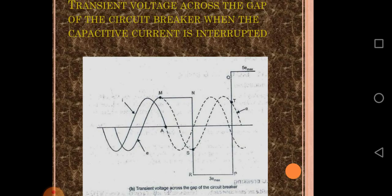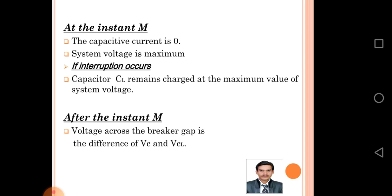This waveform shows the transient voltage across the gap of the circuit breaker when the capacitive current is interrupted. According to the waveform, the capacitive current is zero and the system voltage is maximum at instant A. If interruption occurs, capacitor Cl remains charged at the maximum value of system voltage.